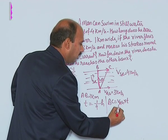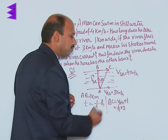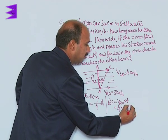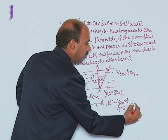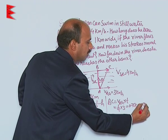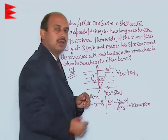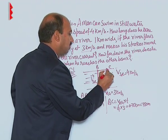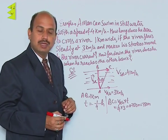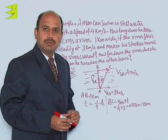So that will be here 1 upon 4 into 3, that will be 0.75 kilometer is equal to 750 meter. So he is travelling this distance that is equal to 750 meters, that is 0.75 kilometer.